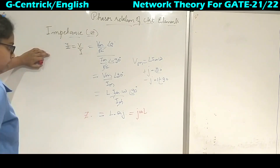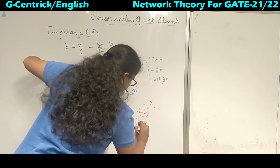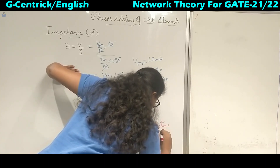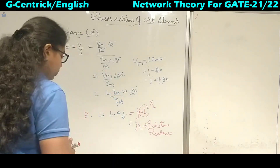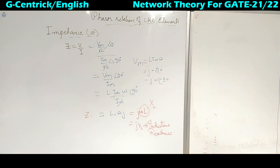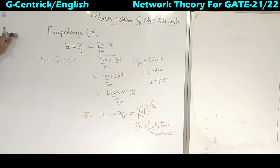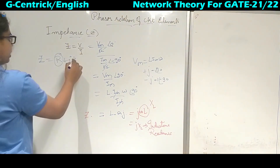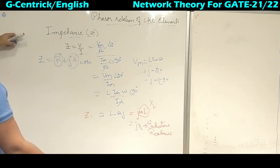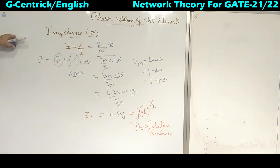So J·ω·L is the impedance of the inductor. The term ω·L is written as XL, so the impedance is Z = j·XL. XL is called the inductive reactance. In general, impedance has the rectangular form Z = R + jX, where R is the real part and X is the reactive part — either inductive reactance XL or capacitive reactance XC, depending on the element.